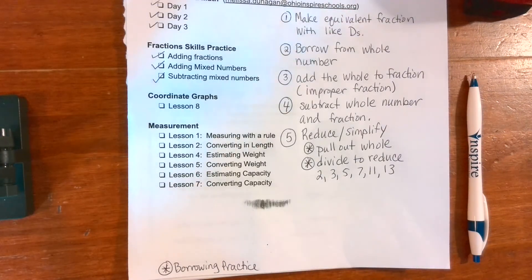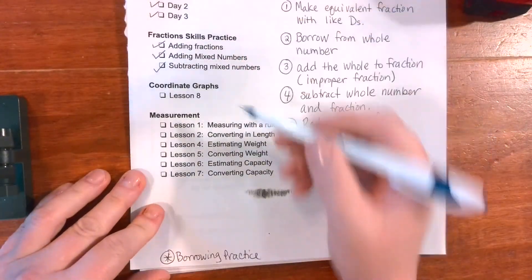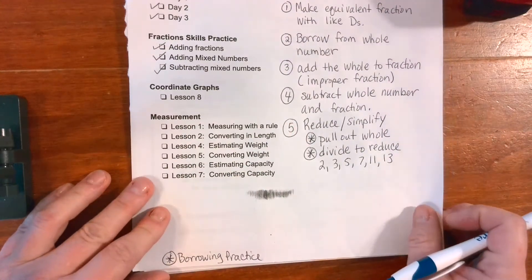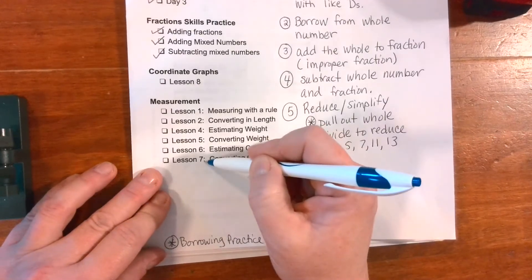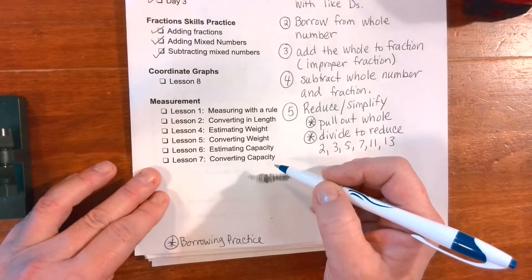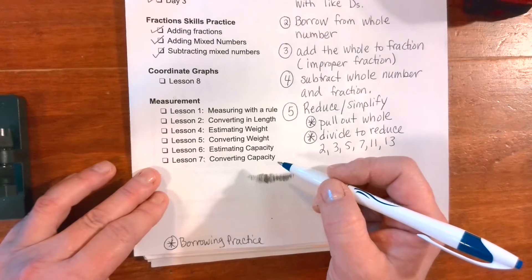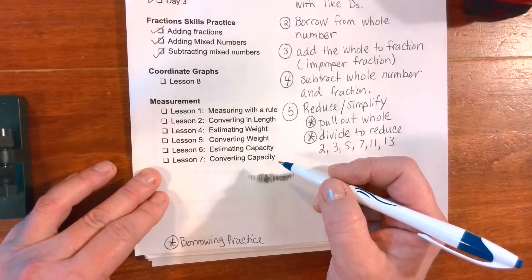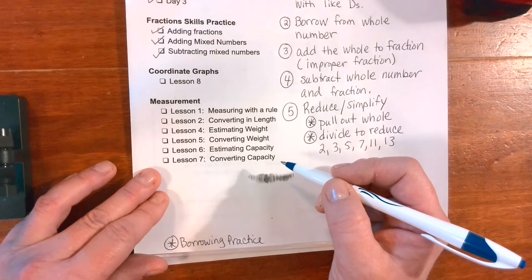We're going to skip down to measuring with a ruler. Remember, you could really do any of these in any order, but we're going to work in order. All these standards and skills from lessons 1 through 7 are all building on what you already know from fourth grade, so it should be a review. But measuring is one of those things — it's the most important skill. We use measuring and fractions every single day for anything you do, whether it is building something.